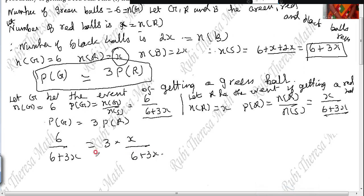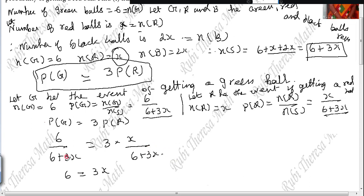Since both denominators are the same, they cancel out. So we get 6 = 3X, which gives X = 6/3 = 2. Therefore X equals 2.